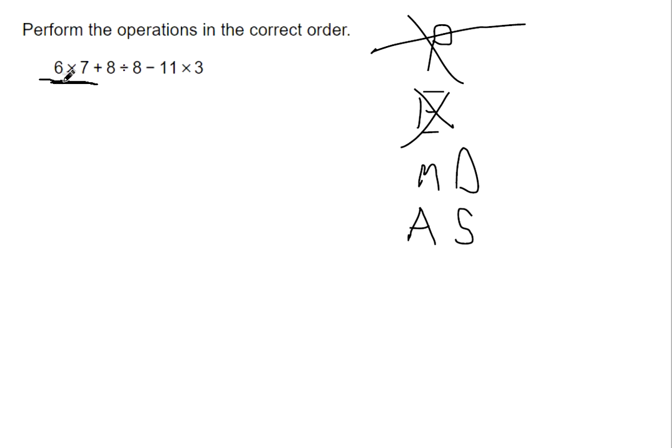Let's read from multiplication or division. Reading left to right, the first one I come to is 6 times 7. So let's copy everything else down. And then reading left to right, the next multiplication or division operation I come to is 8 divided by 8.